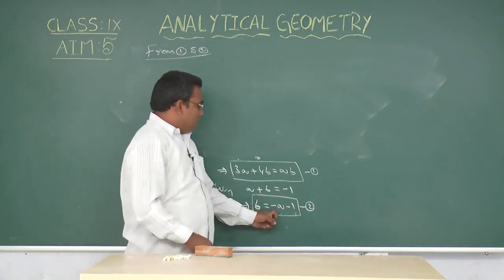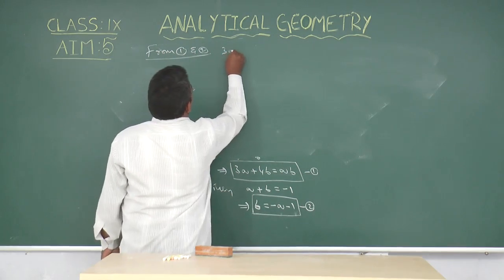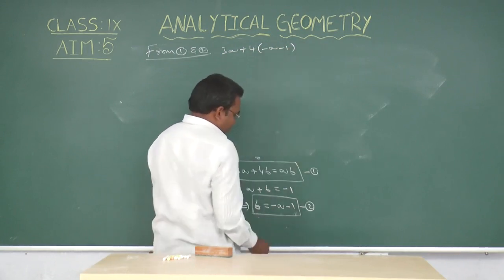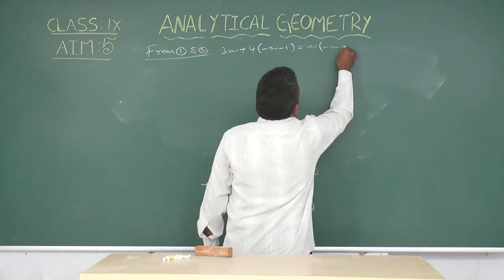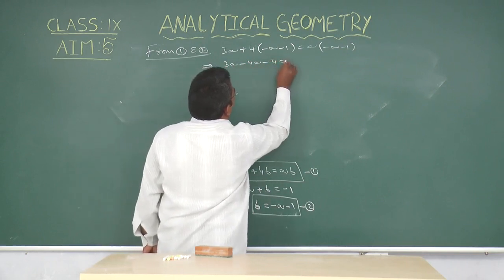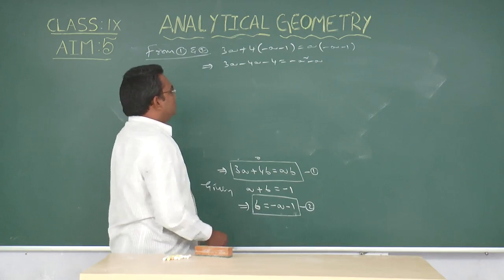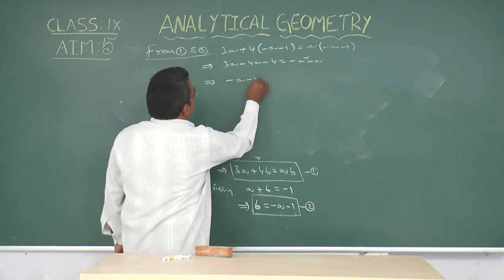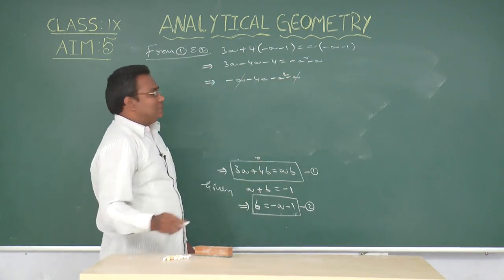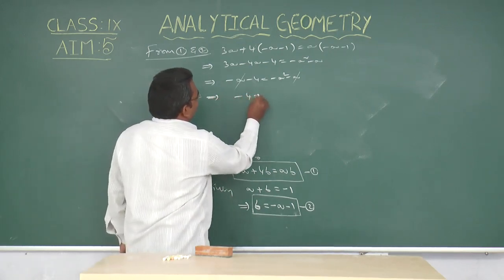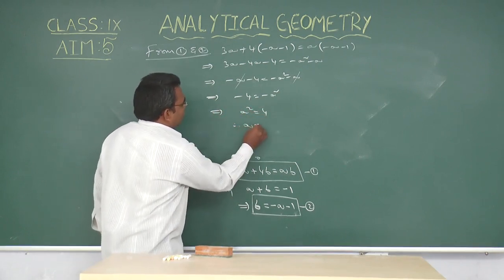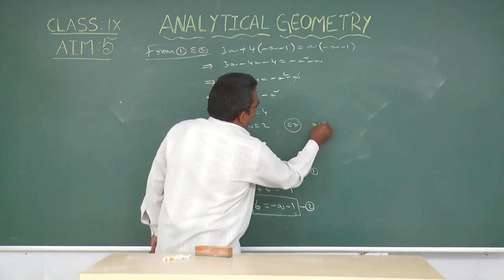Replace the value of b in equation 1. That means 3a + 4(-a - 1) = a(-a - 1). That implies 3a - 4a - 4 = -a² - a. The -a terms cancel on both sides, giving -4 = -a². That implies a² = 4. Therefore, a = +2 or a = -2.